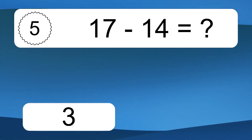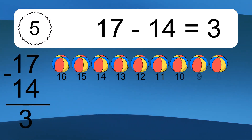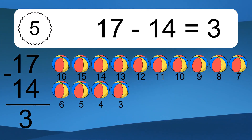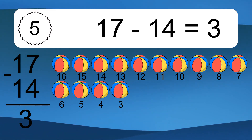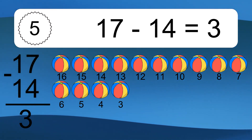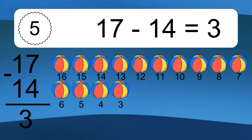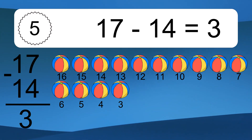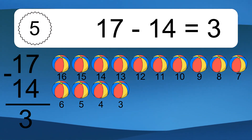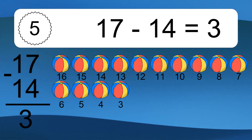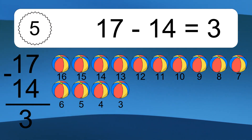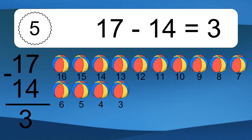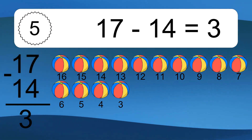17 minus 14 equals what? 17 minus 14 equals 3. Let's count it: 16, 15, 14, 13, 12, 11, 10, 9, 8, 7, 6, 5, 4, 3.